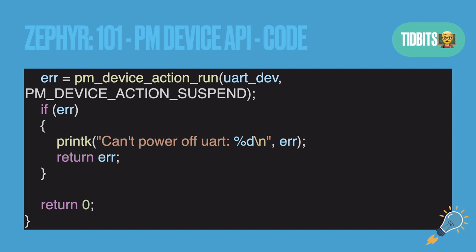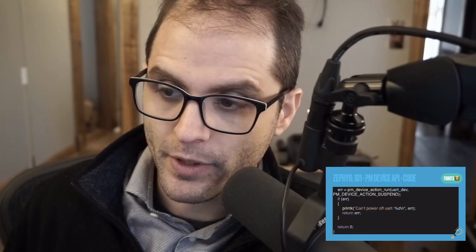The last thing we want to do is call that PM API. What we just enabled is pm_device_action_run, and we're going to be running PM_DEVICE_ACTION_SUSPEND. There's a list of actions you can do — you can restore a device from suspension or you can suspend it, i.e. turn it off. This is the most important part — this is the API call that will make the difference in your application.